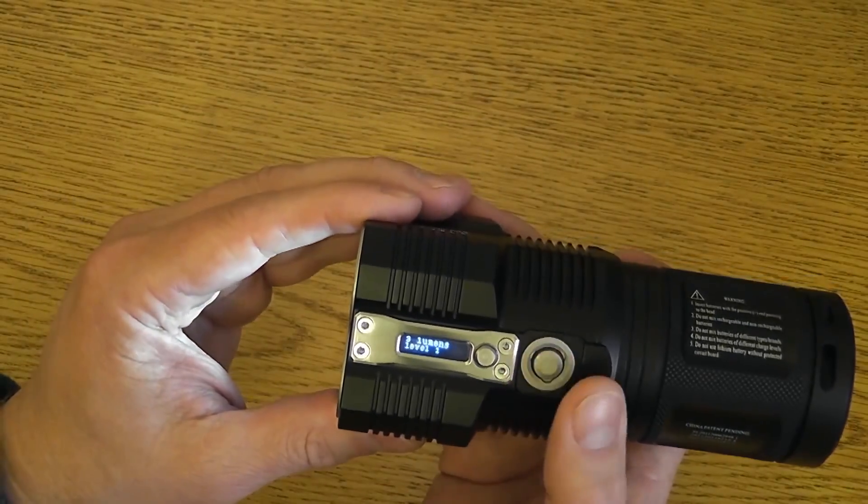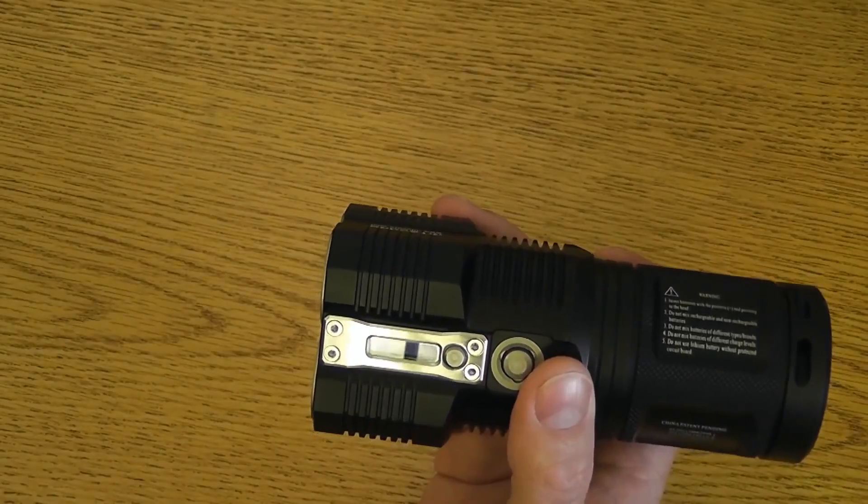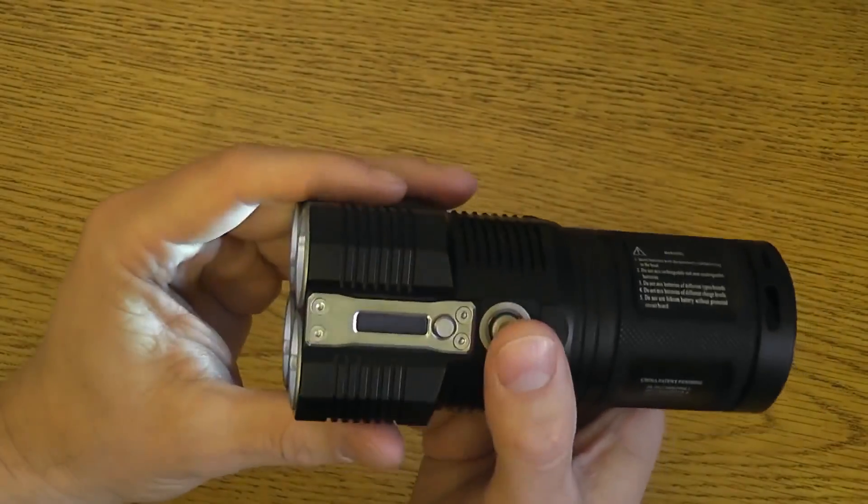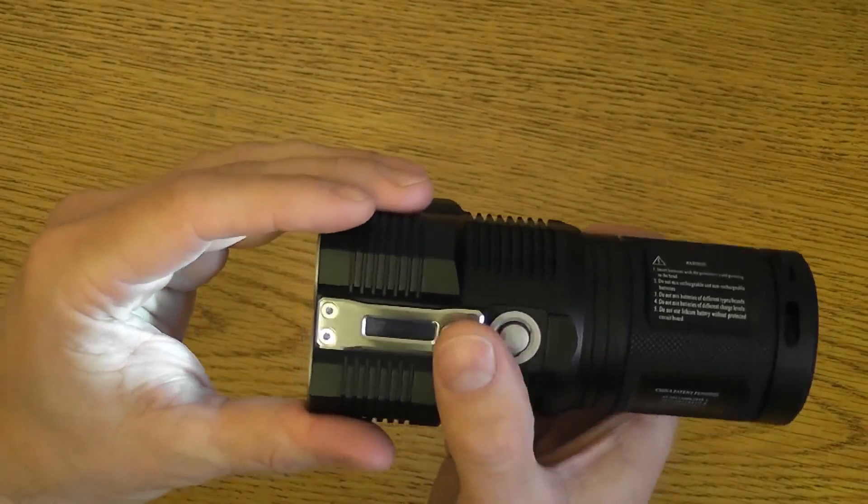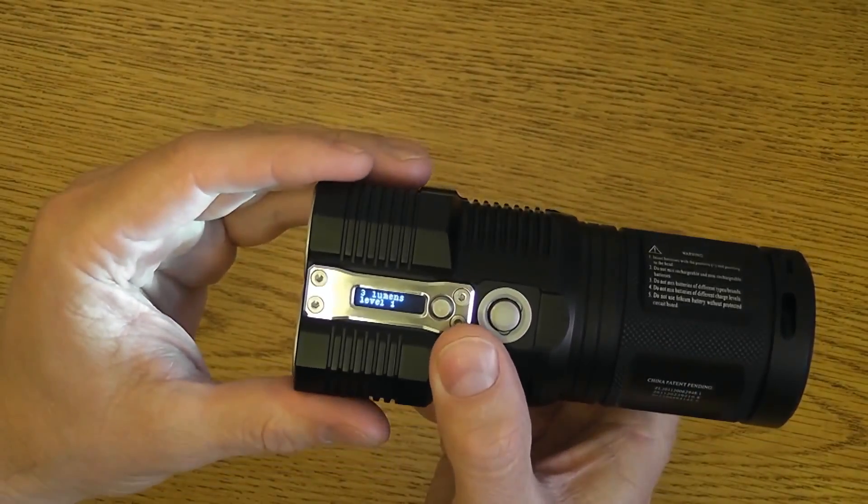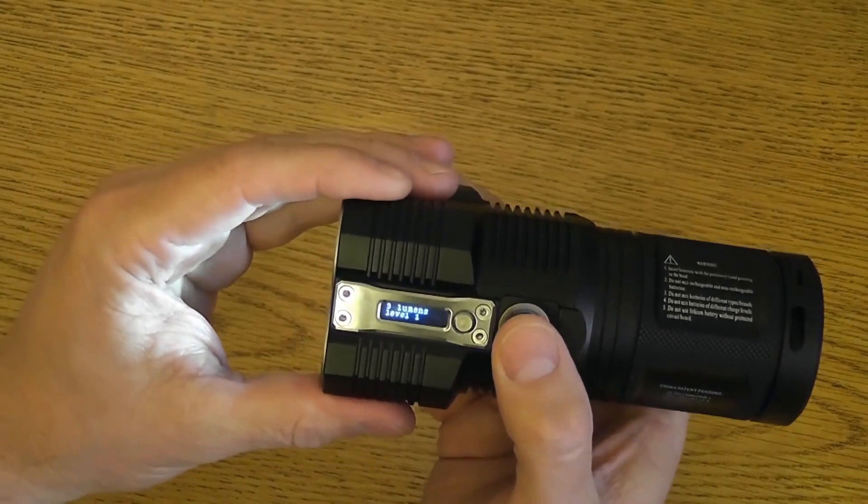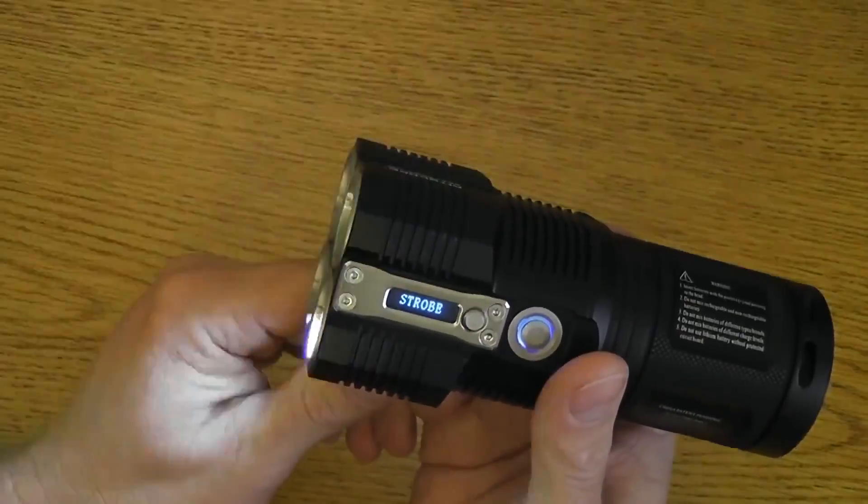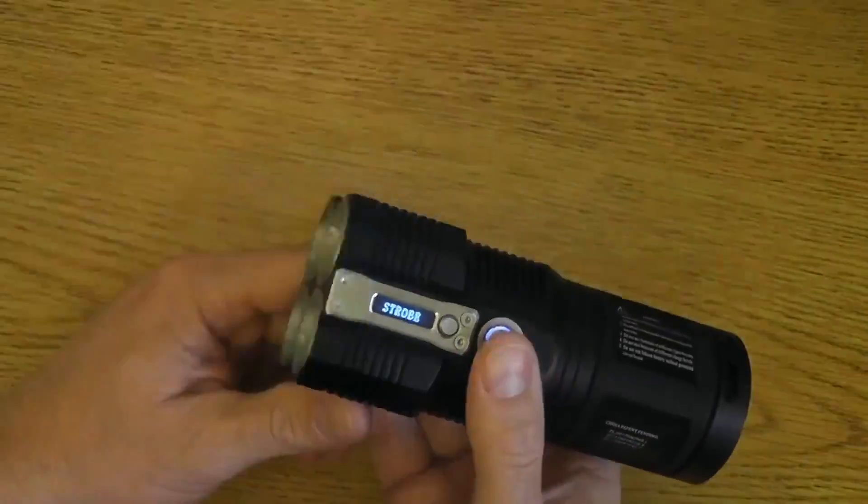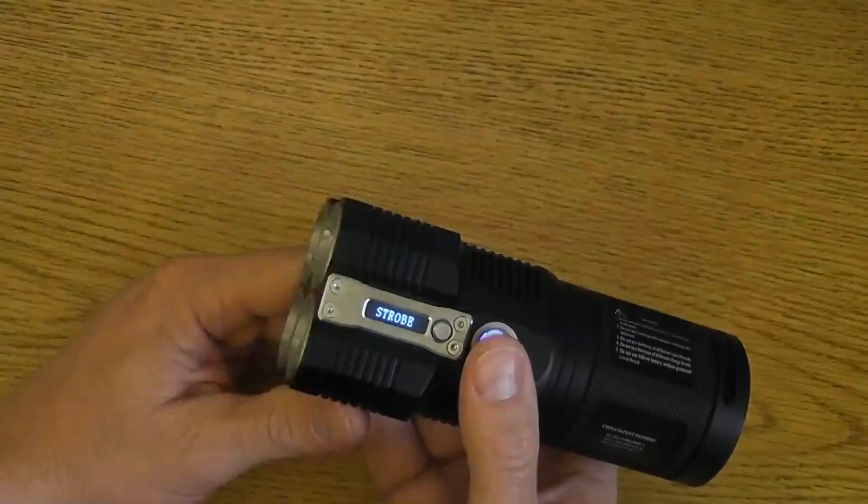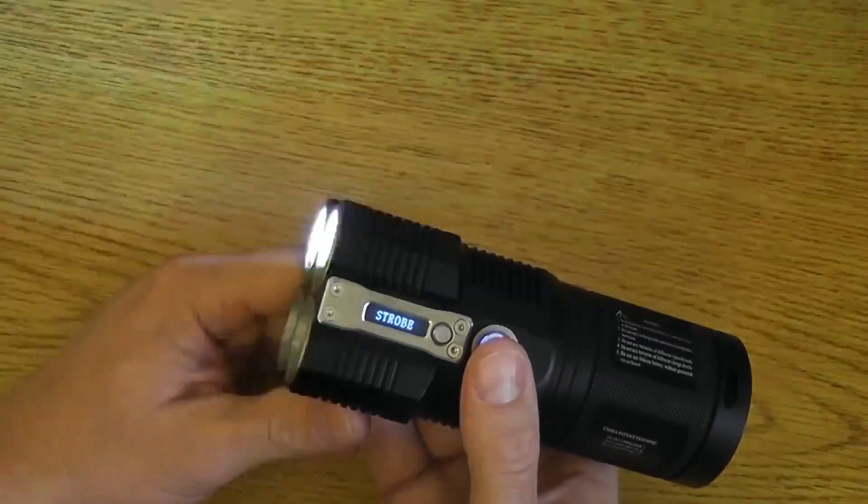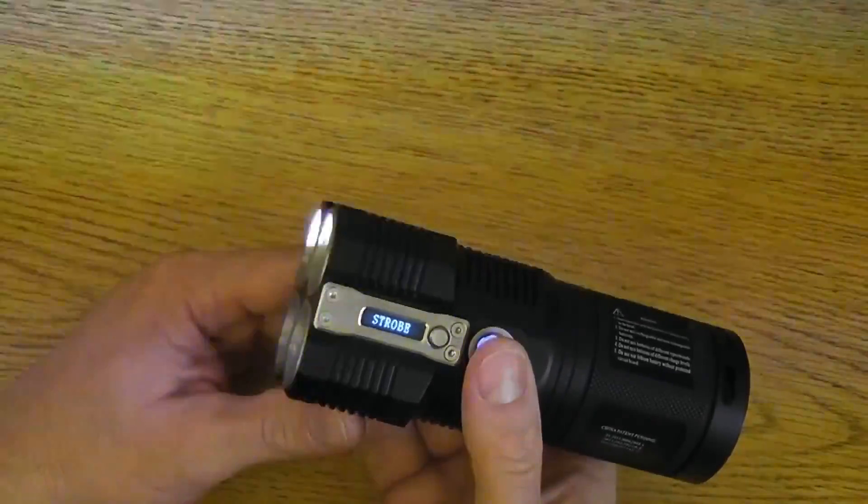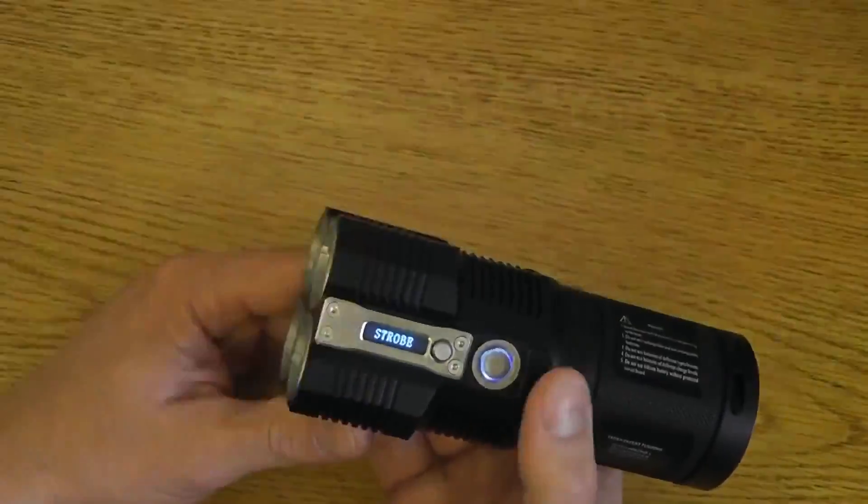Alright, this light also has some hidden functions in it. From any of the on positions, right now we're in level one, three lumens. I can double tap and get me to strobe. It's an especially annoying strobe. Typically, the strobe doesn't bother me or throw me off too much. But when I stare at that on the wall, I don't know if it's the frequency. It's not a triple frequency like a lot of other lights, but it is horrendously annoying. Like, it even gets me. And again, I'm not sensitive to it.